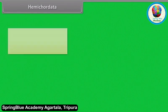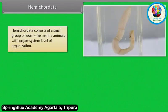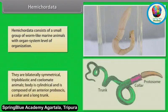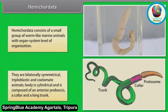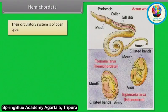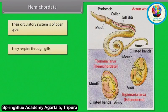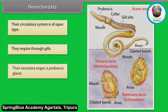Hemichordata consists of a small group of worm-like marine animals with organ system level of organization. They are bilaterally symmetrical, triploblastic and coelomate animals. Body is cylindrical and is composed of an anterior proboscis, a collar and a long trunk. Their circulatory system is of open type. They respire through gills. Their excretory organ is the proboscis gland.